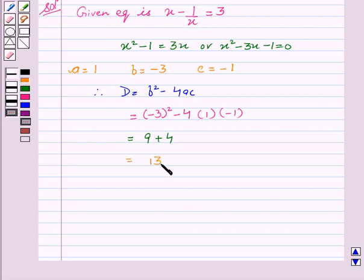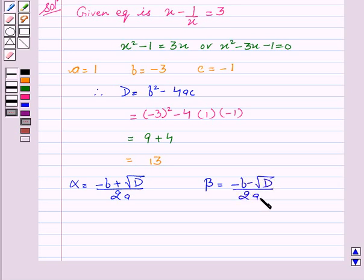Now we can calculate the roots. Root alpha equal to minus b plus square root of d upon 2a and beta equal to minus b minus square root of d upon 2a.